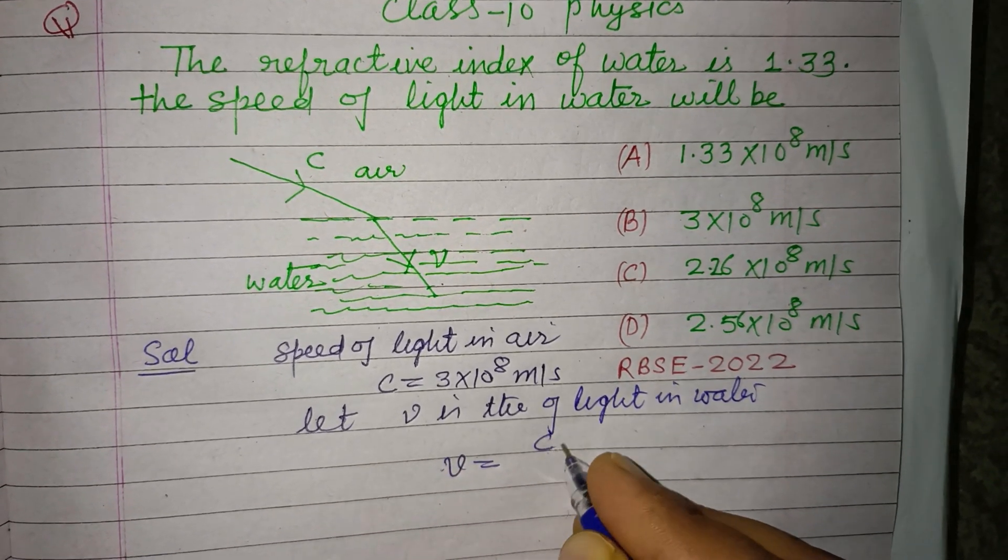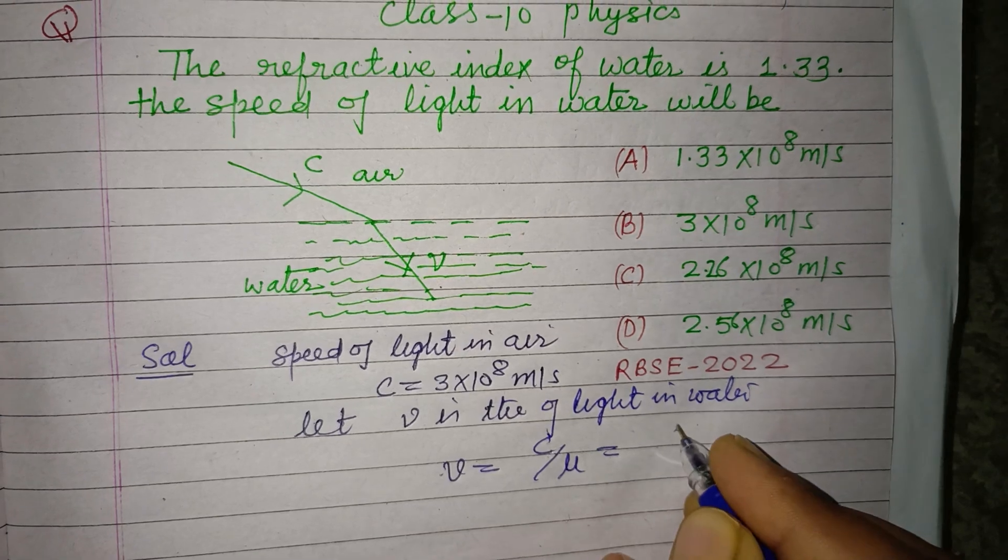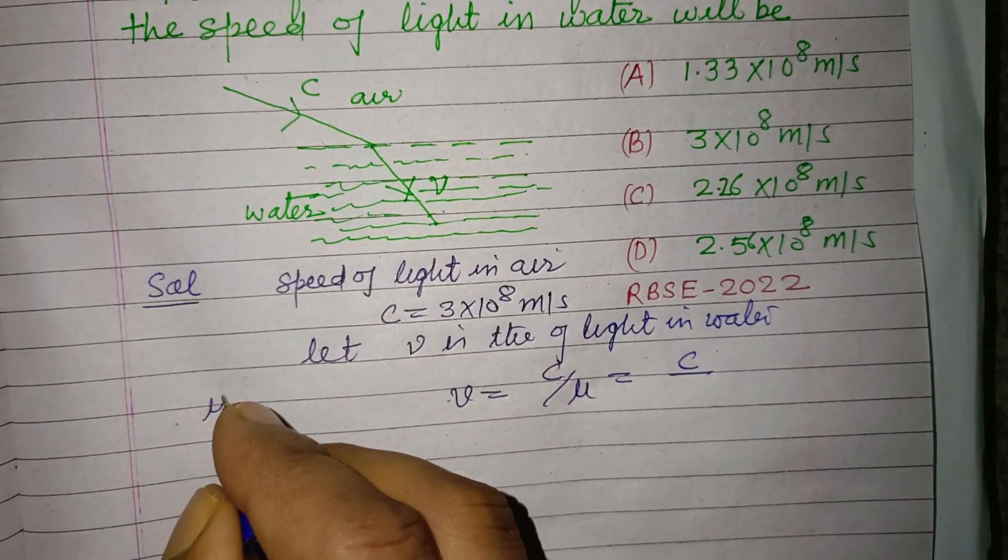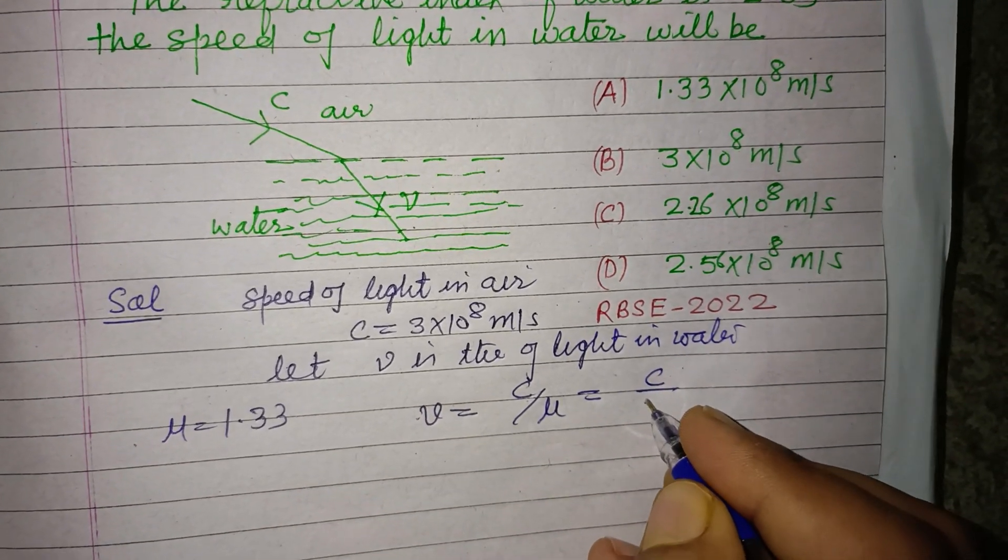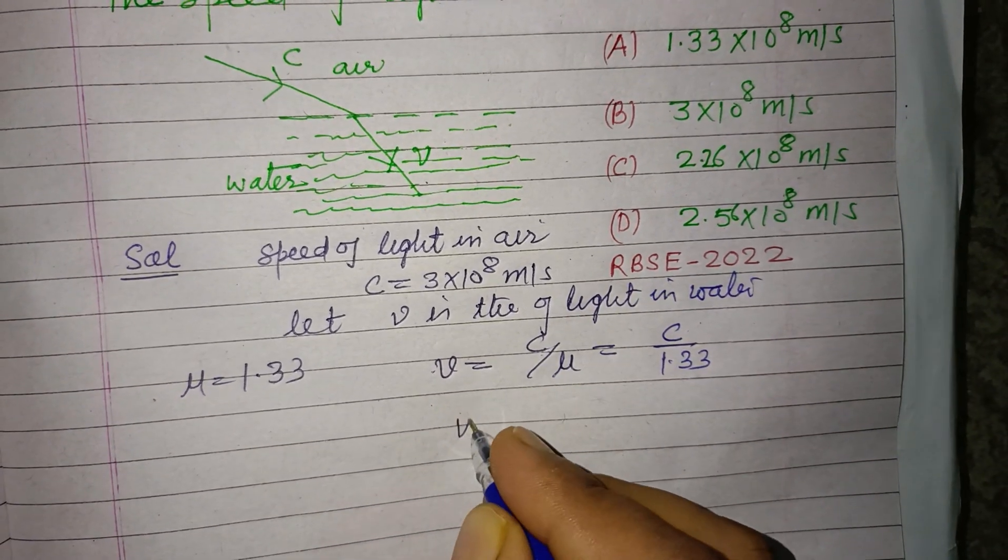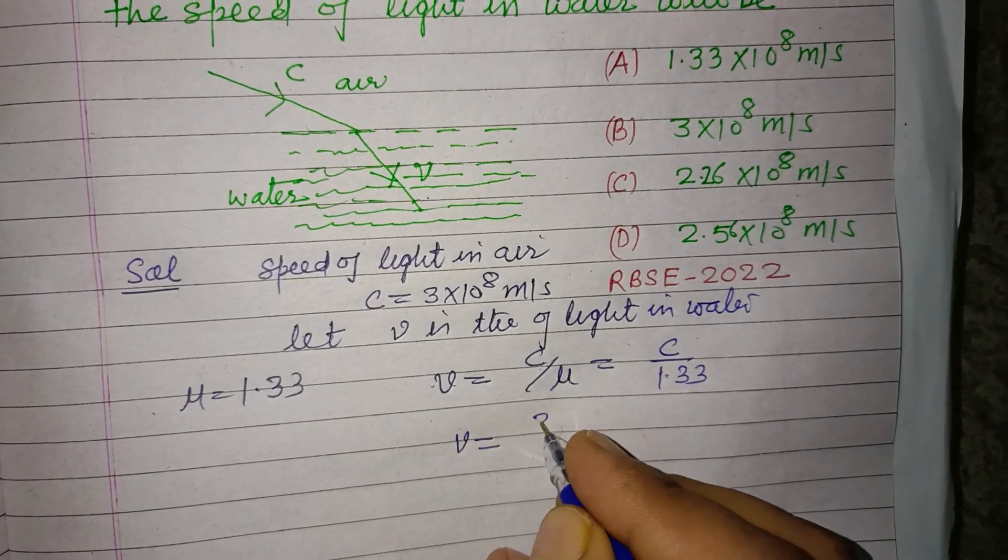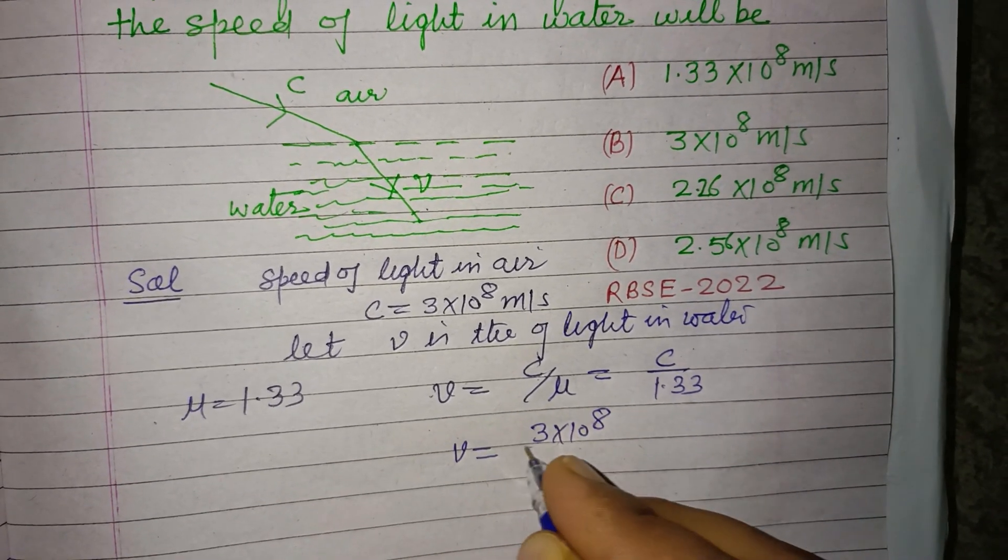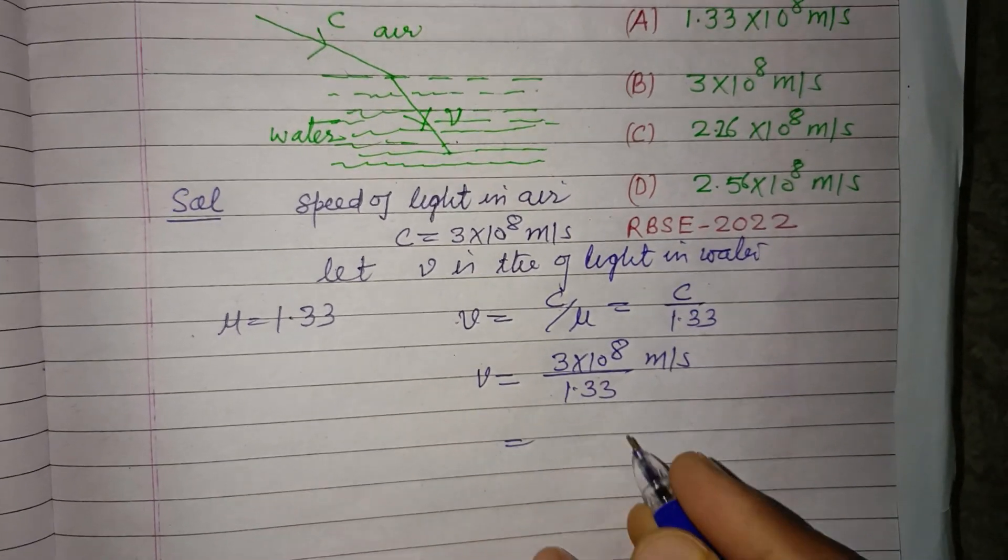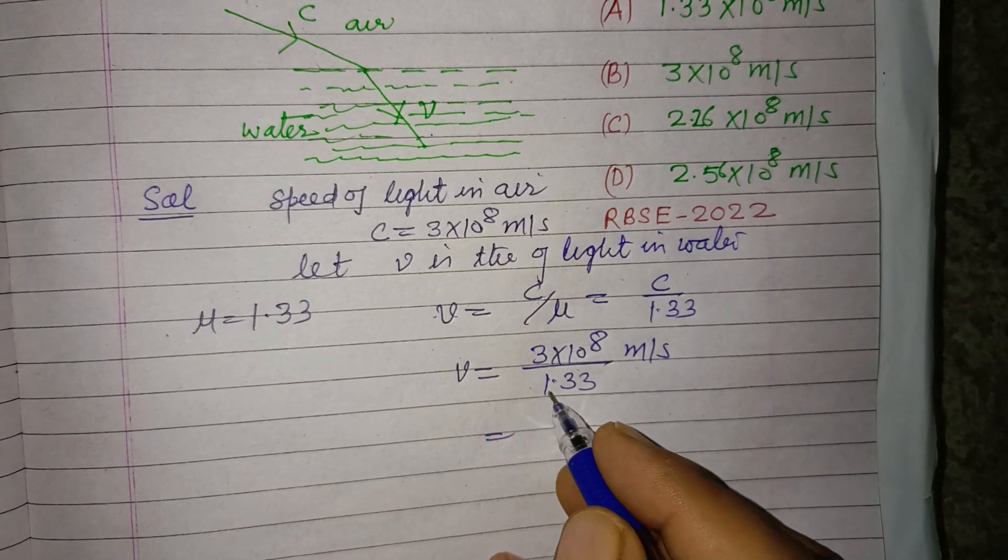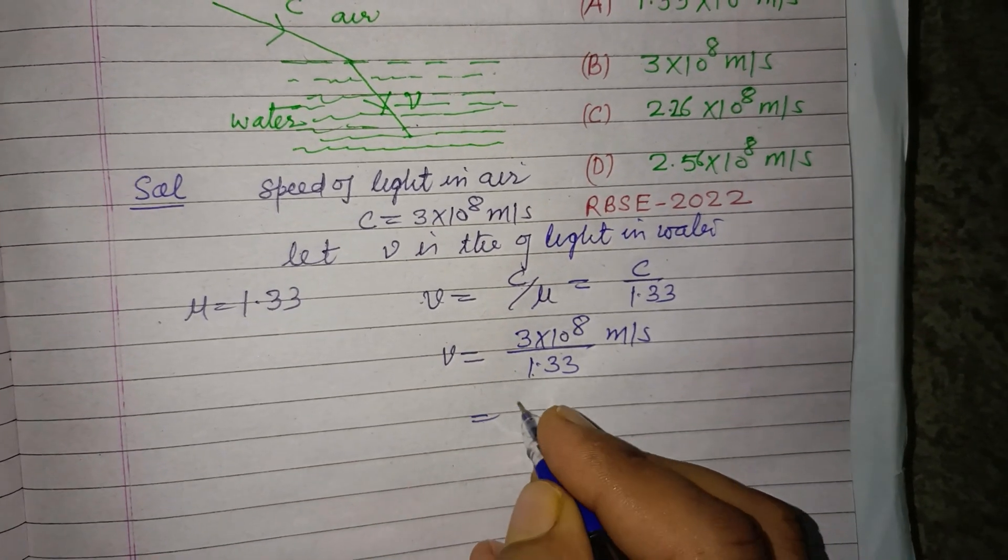v equals c over mu. Here mu is 1.33. Therefore, speed in water is 3 into 10 to the power 8 over 1.33 meter per second. When we divide 3 by 1.33, 13 into 26, so it's 2.26.